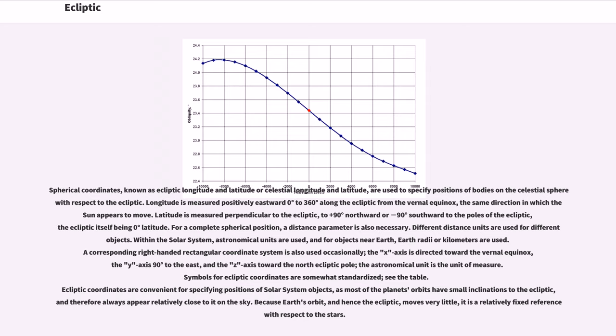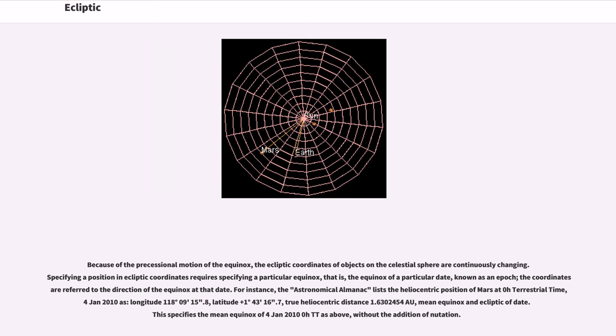Ecliptic coordinates are convenient for specifying positions of solar system objects, as most of the planets' orbits have small inclinations to the ecliptic, and therefore always appear relatively close to it on the sky. Because Earth's orbit, and hence the ecliptic, moves very little, it is a relatively fixed reference with respect to the stars. Because of the precessional motion of the equinox, the ecliptic coordinates of objects on the celestial sphere are continuously changing.